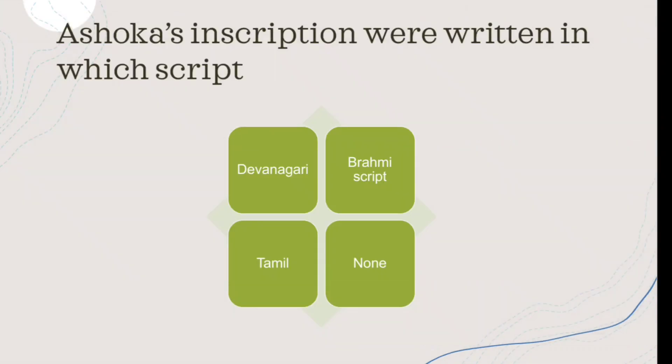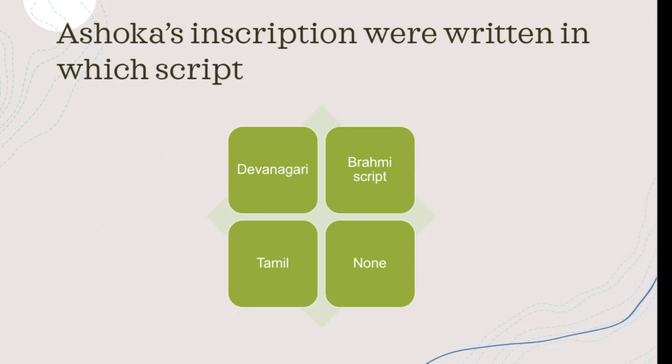Ashoka's inscriptions were written in which script? The right answer is Brahmi script. Most of Ashoka's inscriptions that have been found are written in the Brahmi script.